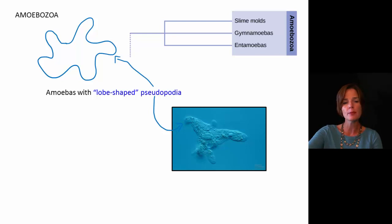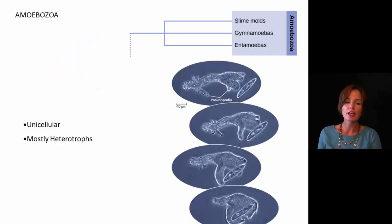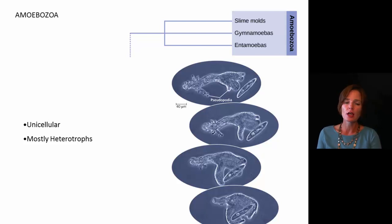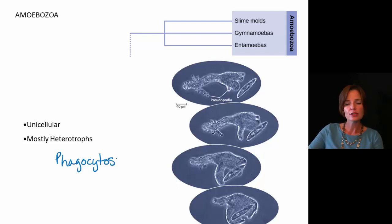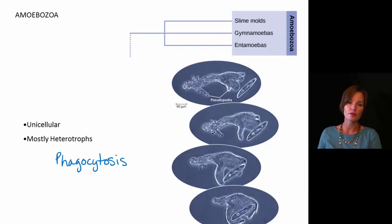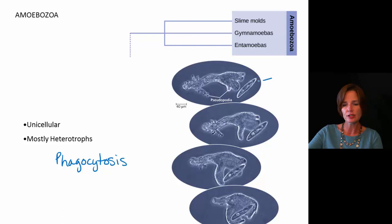When we're talking about the amoebozoa, they are going to be unicellular — made up of just one cell — and they're mostly heterotrophic. They will eat in many cases by a process called phagocytosis. Phagocytosis is this wrapping around of the pseudopods around a food source — here we have a little cell that is going to be the food.